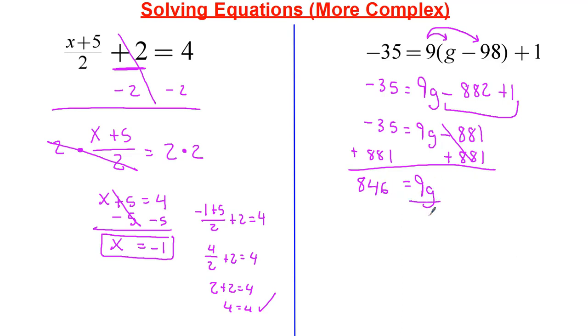So we have 9g is going to be equal to negative 35 plus 881 is 846. I've got to get g by itself, so divide by 9. Divide by 9. So now I have g is equal to 94, or 94 is equal to g.